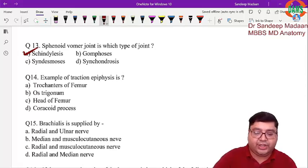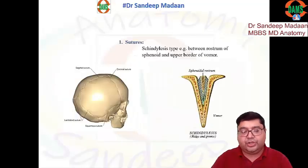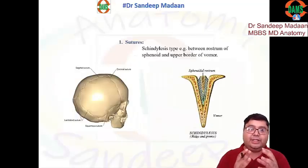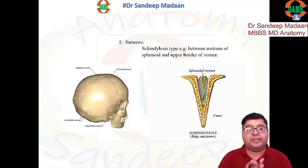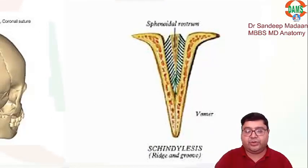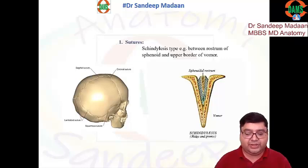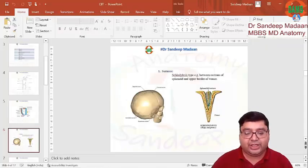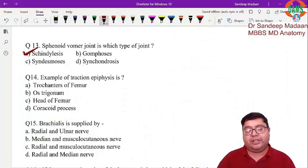The sphenoid-vomer joint is a schindylesis joint. All skull bones have fibrous joints called sutures, which cannot move. Schindylesis is also a type of suture but with a special name — it refers to the joint where the vomer fits into the rostrum of the sphenoid, forming a specific groove-and-ridge type of suture.